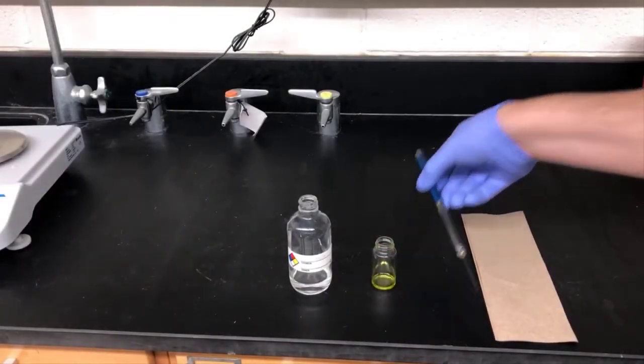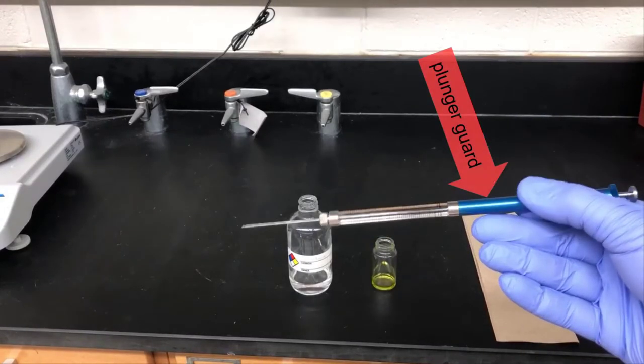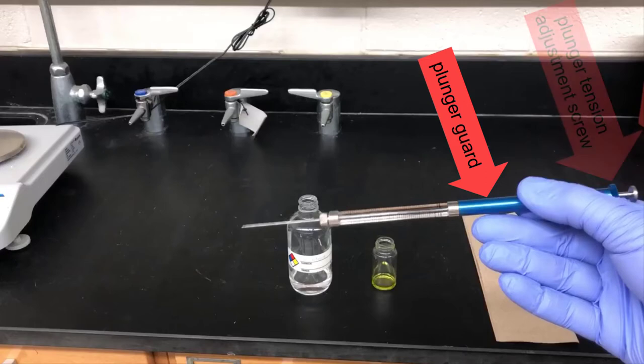Now it's time to work with the GC syringe. This is a 25 microliter syringe that has a blue plunger guard on it. It also has a screw top here that you can loosen or tighten to adjust the tension on the plunger.